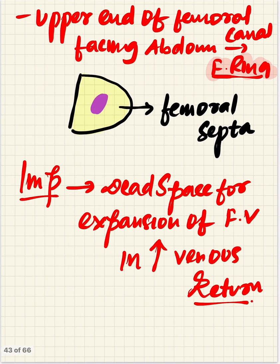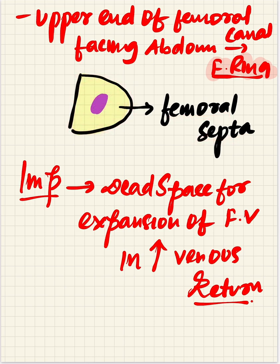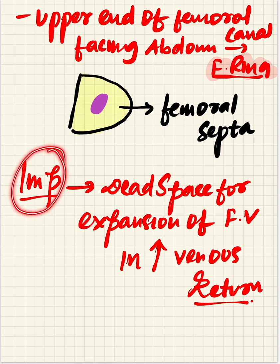When viewed from the top, the upper end of the femoral canal is enclosed by areolar tissue called the femoral septum. This areolar tissue covers the femoral canal from above.